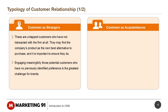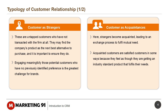Next is Customer as Acquaintances. Here, strangers become acquainted, leading to an exchange process to fulfill mutual need. Acquainted customers are satisfied customers in some ways because they feel as though they are getting an industry standard product that fulfills their needs.